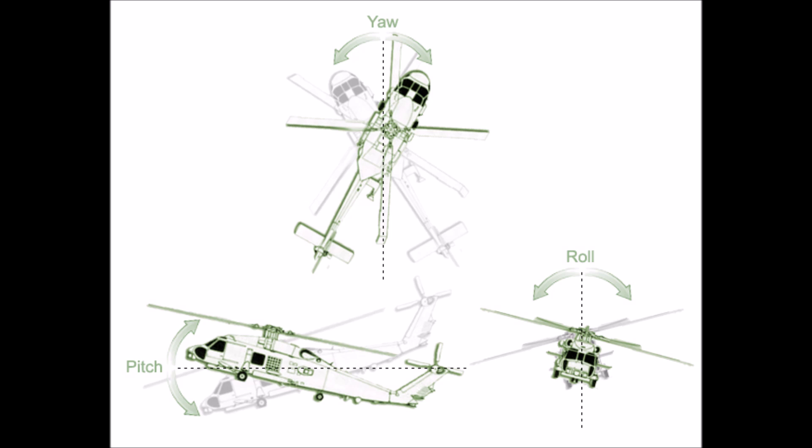Yaw is controlled by the tail rotor on the back. Then you've got roll, which is the model tilting to the left and right, and pitch, which is the model tilting forwards and backwards. Roll and pitch are quite often grouped together and called the cyclic controls. Lastly, you have the collective pitch — on some models it's just a pure throttle, on others it's actually changing the pitch of the rotors, increasing the lift and making the model go up or down.